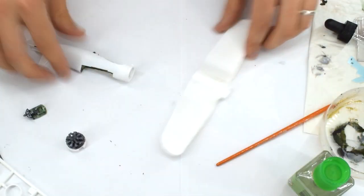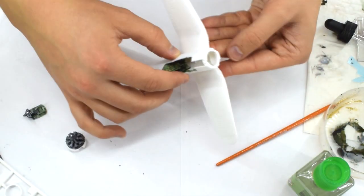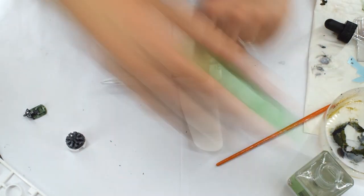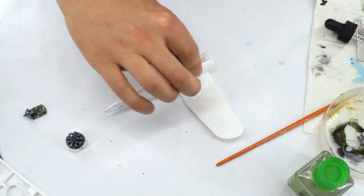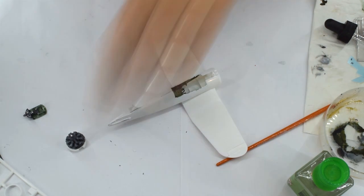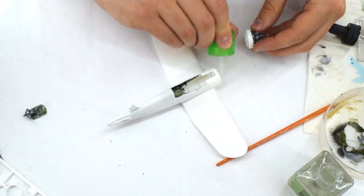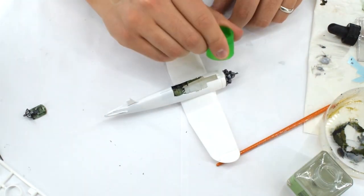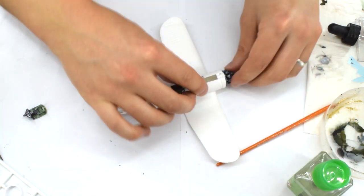The wings can then be added to the fuselage and fit surprisingly well, with no gaps being visible. I ran the cement down the joins in order to help it bond together. The engine assembly was also then cemented into place on the front of the model.